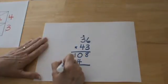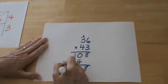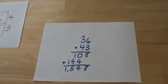And now you simply do the addition. And you have 8, 4, 5, 1. So you can see that through the traditional method.